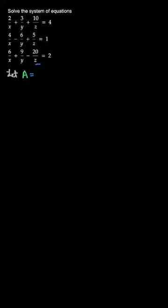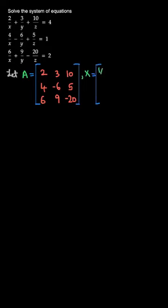Say A as coefficients of 1/x, 1/y, and 1/z. What do I mean by coefficients? If you observe, how do we get 2, 3, minus 6, and 9? They are coefficients of 1/x, 1/y, and 1/z. Similarly, write coefficients: 10, 5, and minus 20. And B, or say X first of all, will be 1/x, 1/y, and 1/z.